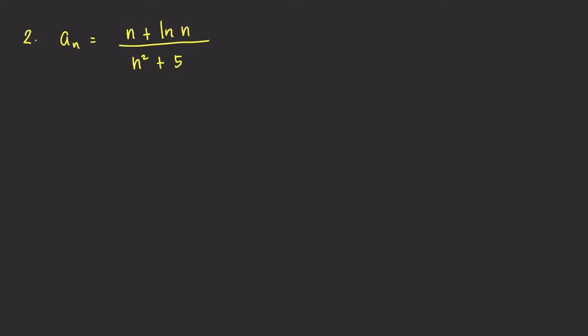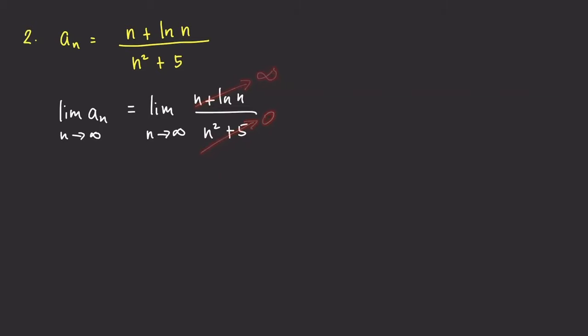Now let's move to the next problem. We're given a sub n equal to n plus ln n, all over n squared plus 5. We compute the limit of a sub n as n goes to infinity. As n goes to infinity, the numerator goes to infinity and the denominator goes to infinity — so we have an indeterminate form infinity over infinity. We may apply L'Hôpital's rule, but keep in mind that the values of n are just integers, so we need to handle this carefully.